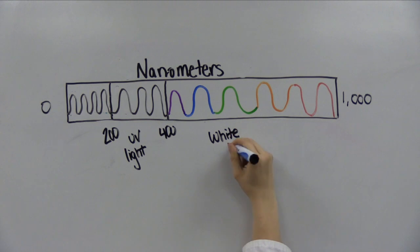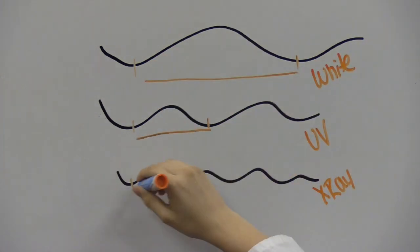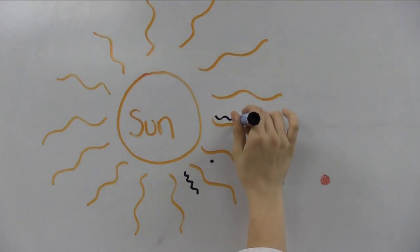Ultraviolet light is electromagnetic radiation with a wavelength from 200 nanometers to 400 nanometers. It is shorter than visible light but still longer than the waves of x-rays. It is present in sunlight, however there is so little of it it isn't enough to expose fluorescence.